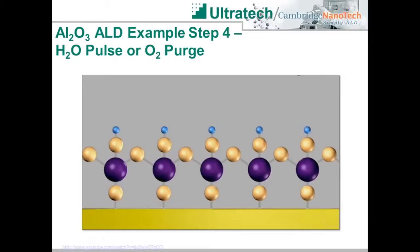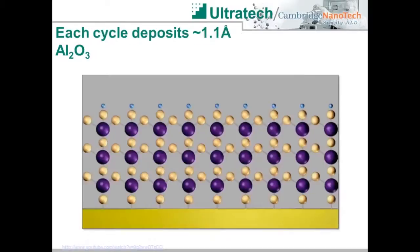At the end of the four steps of the TMA-water ALD cycle, an idealized version of the substrate surface looks like this. We have done two things: we have formed a layer of alumina, and we have left the surface looking very much like it did when we started, with the exposed surface containing a high density of hydroxyl groups. Repeating the four steps over and over allows us to build up our alumina film, growing at approximately an angstrom per cycle.